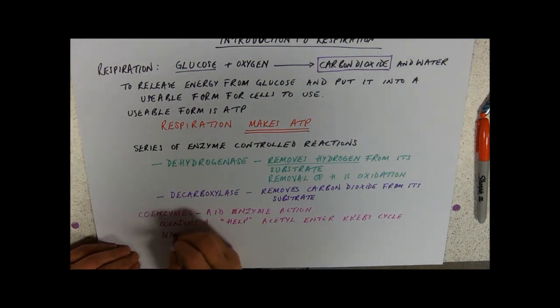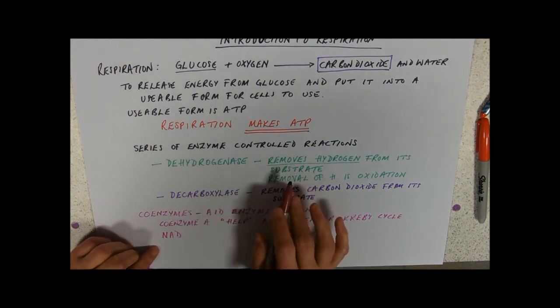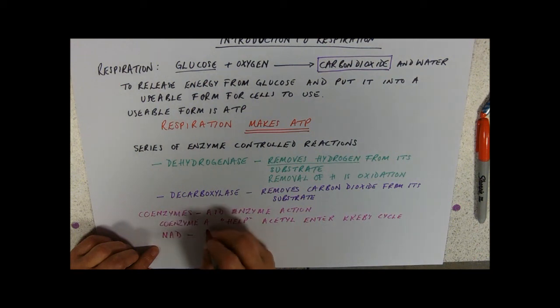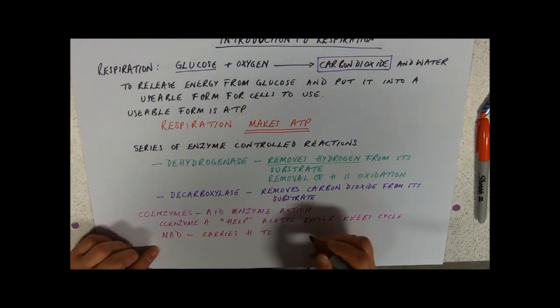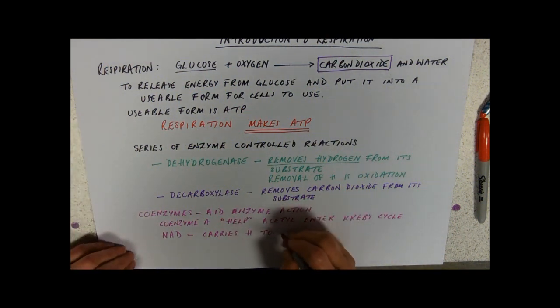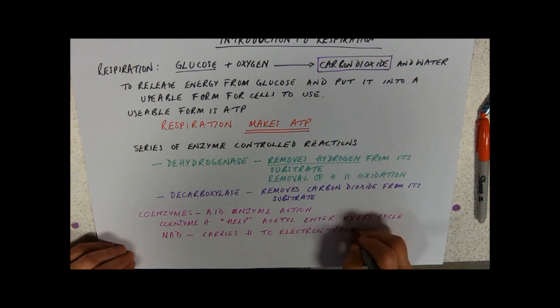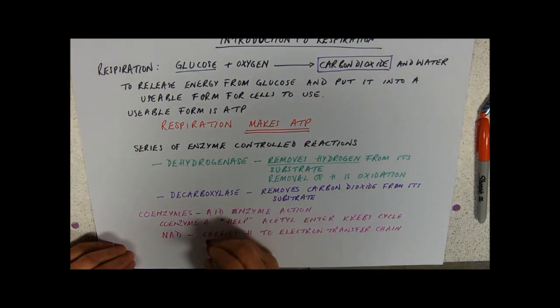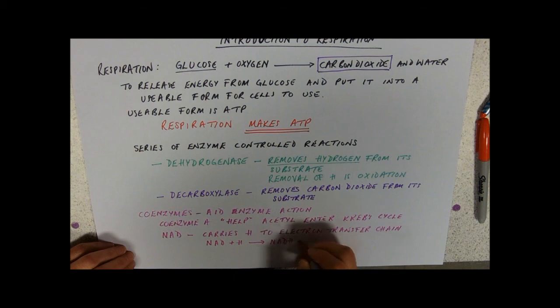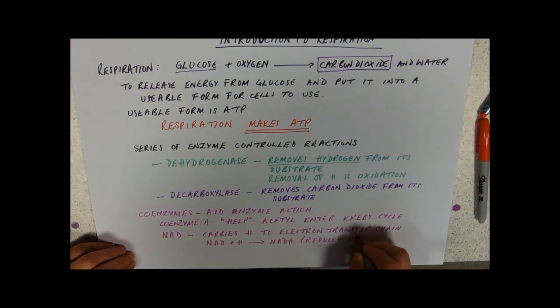Then we've got a coenzyme called NAD. Dehydrogenase is removing hydrogen and NAD carries that hydrogen. Where does it carry it to? It carries it from where it has been removed from the substrate to the electron transport chain. Just as our removal of hydrogen is oxidation, NAD when it picks up the hydrogen is reduced. So as it goes from NAD plus hydrogen to NADH, what we would call that is reduced NAD.